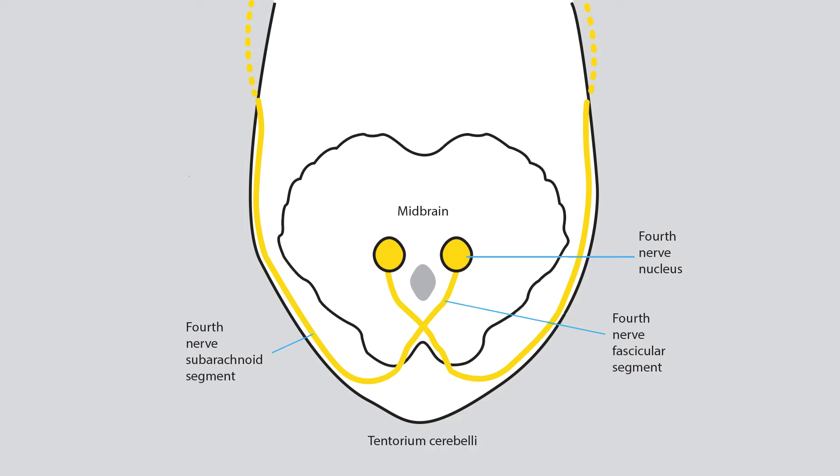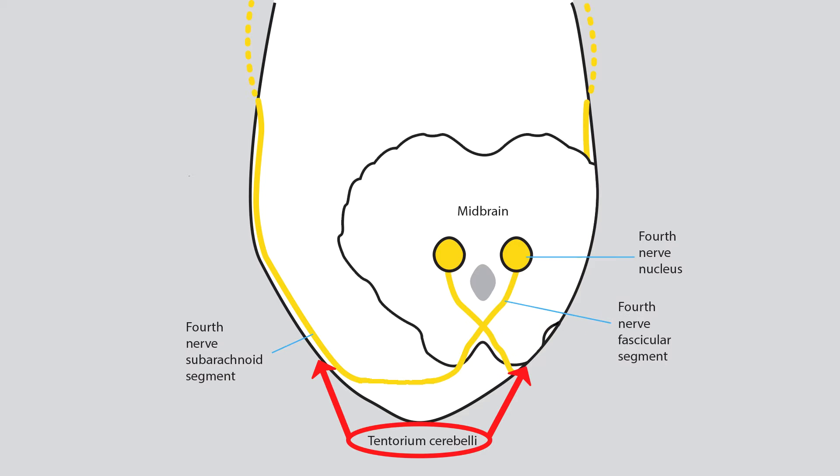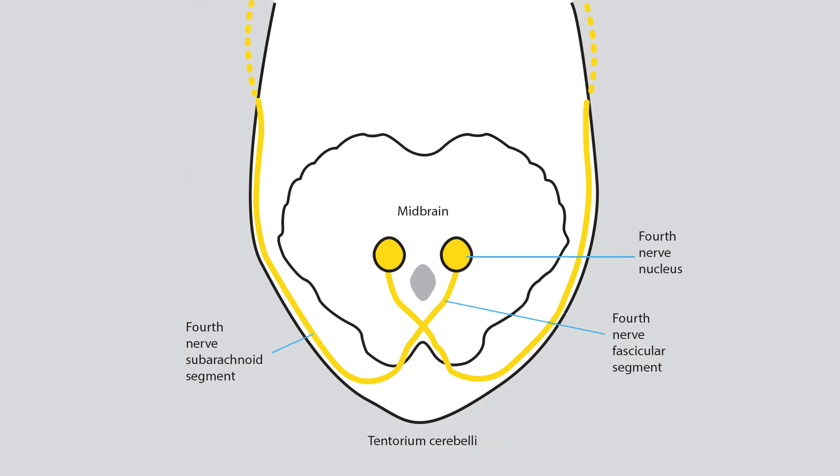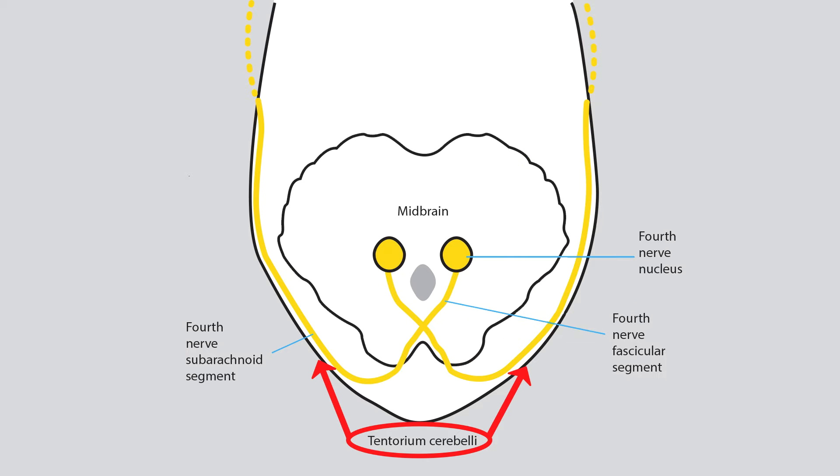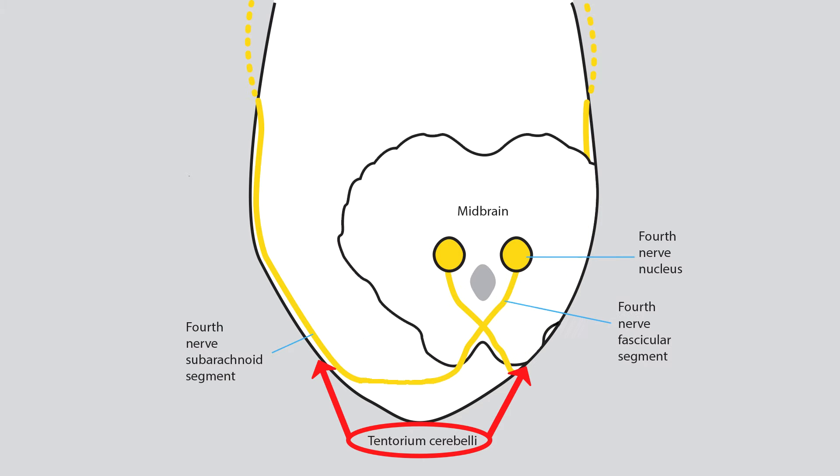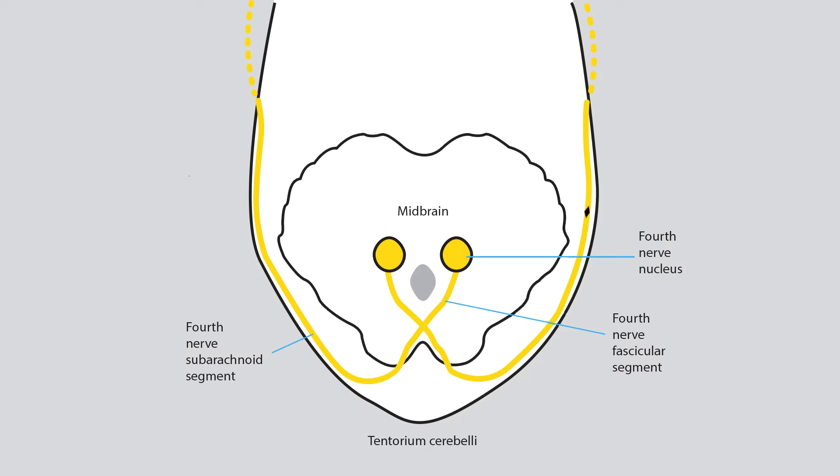At their dorsal exit into the subarachnoid space, the fourth nerves can be damaged by blunt head trauma as the moving dorsal midbrain collides with the stationary, knife-like margin of the tentorium cerebelli. Also occurring in this segment is ischemia to the nerve. Fortunately, such lesions resolve spontaneously within weeks.